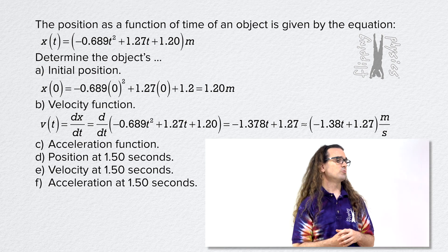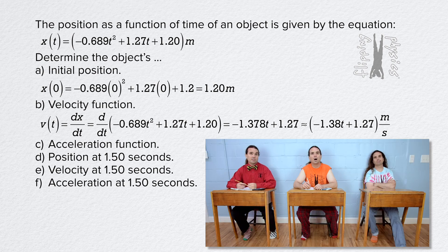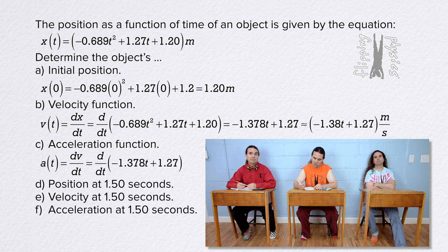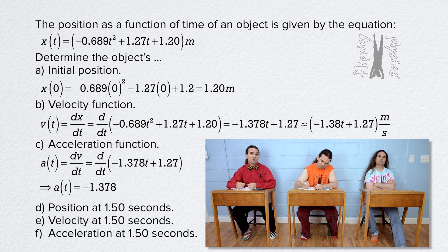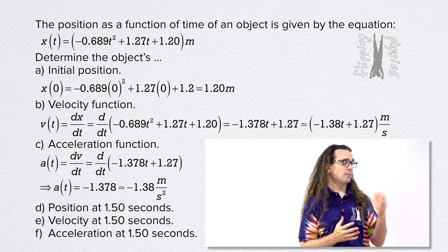Billy, please do part C. Part C is where we determine the acceleration function. Acceleration equals the derivative of velocity with respect to time. That just equals negative 1.378, or negative 1.38 meters per second squared. Correct, Billy.